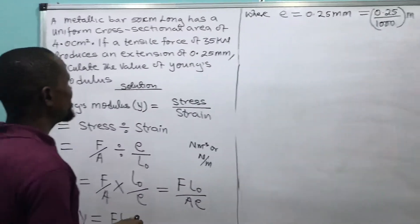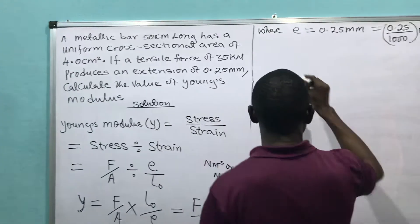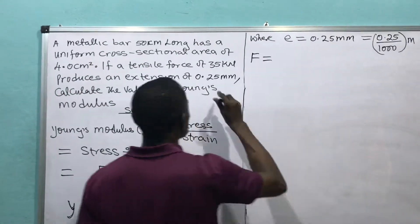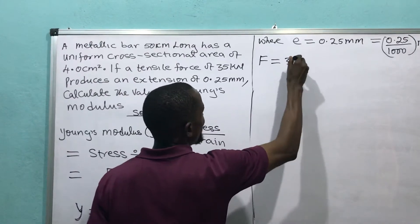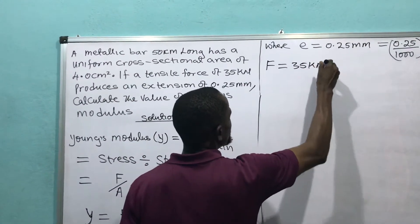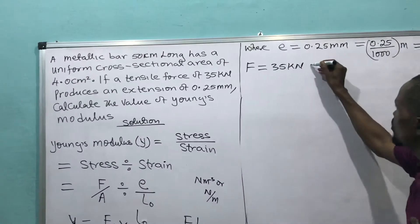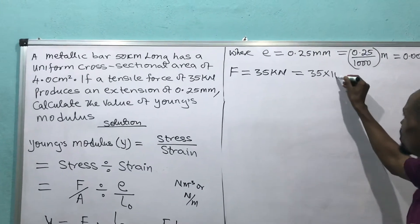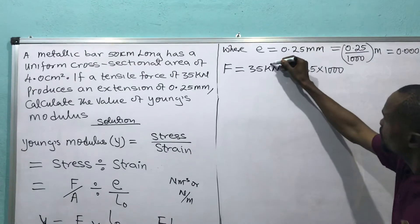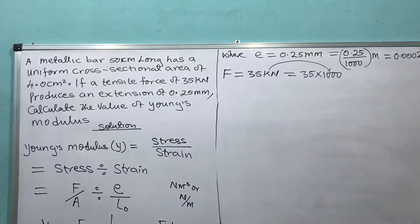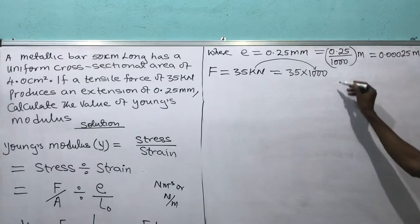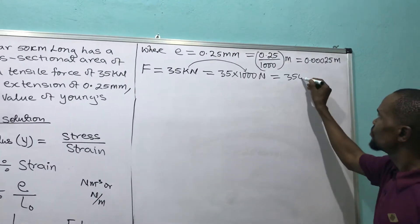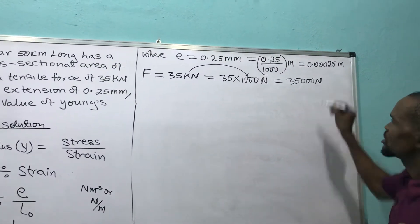What else did they give me? The force is given as 35 kilonewtons. Kilo means 1,000, so 35 kilonewtons equals 35 times 1,000, which gives me 35,000 Newtons.